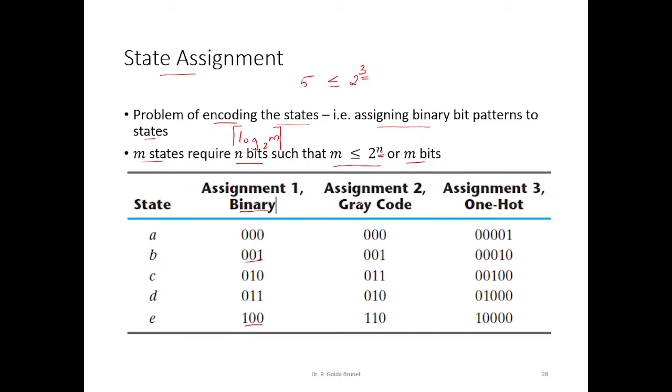If we assume gray code assignment, then instead of binary sequence, we will follow the gray code sequence. In gray code, the beauty is the adjacent counting bit patterns will differ by at most 1 bit position. So, here, when A is 000, B will be 001 and C will be,